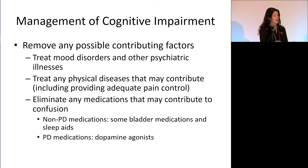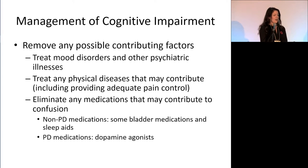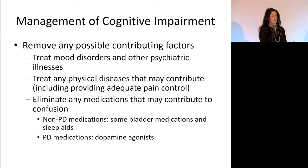Unfortunately, dopamine agonists — pramipexole, ropinirole, rotigotine patch — can also contribute to confusion, and when people come to me with this complaint I often have to reduce or remove this class of Parkinson's medication.